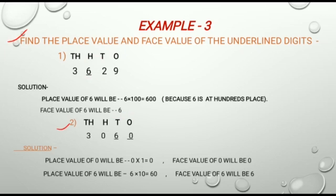And the second part is 3060. In this number, we have two underlined digits. The first one is 0 which is at 1's place, and the second is 6 which is at 10's place.